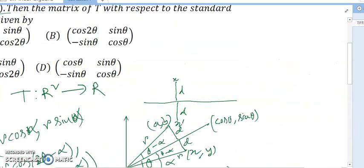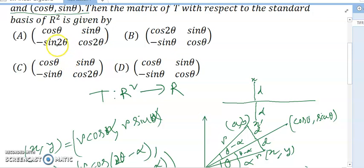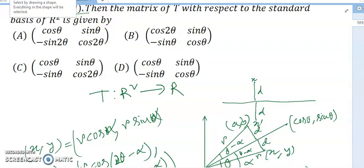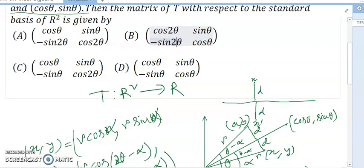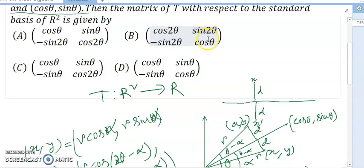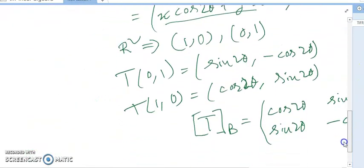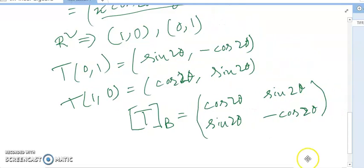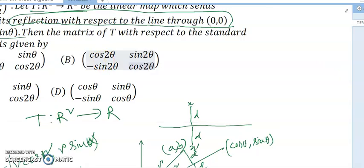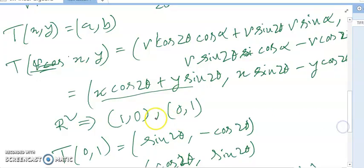The answer is option B: [cos 2θ, sin 2θ; sin 2θ, -cos 2θ]. The key point to remember is how to find the transformation matrix with respect to the standard basis of R²: apply T to each basis vector and write the results as columns of the matrix. I hope this is clear for everyone.